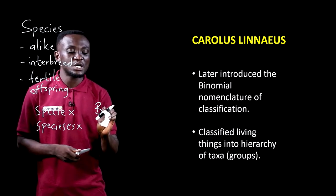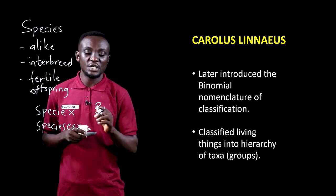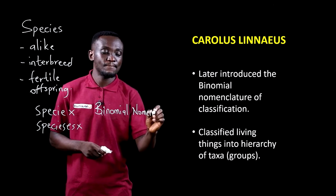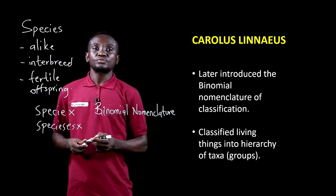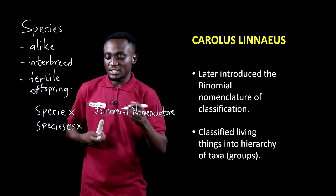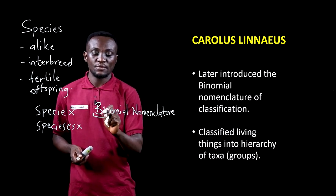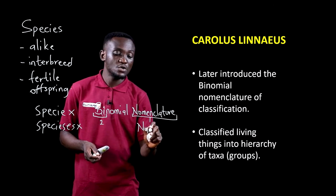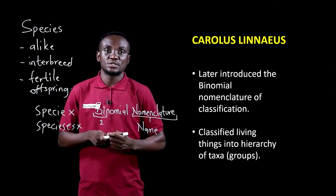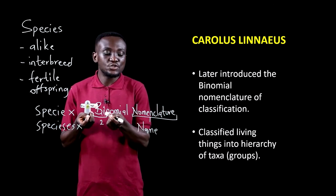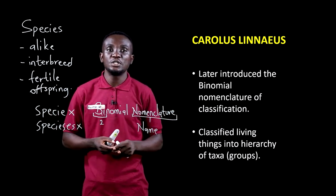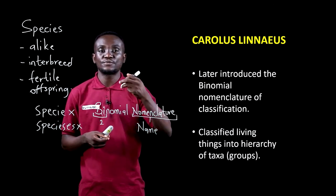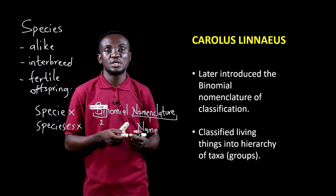Binomial nomenclature is a concept we still adopt today in modern classification. The word 'bi' refers to two, so binomial largely means two. Nomenclature refers to the naming given to an object or organism. So binomial nomenclature largely refers to a two-word name given to living organisms. He also classified living things into a hierarchy of taxa or groups, from the highest to the lowest, that living organisms belong to.